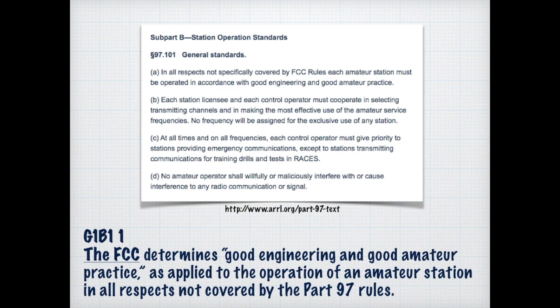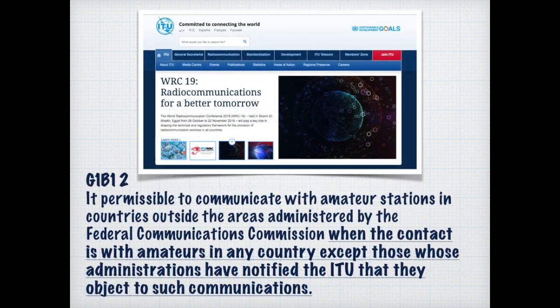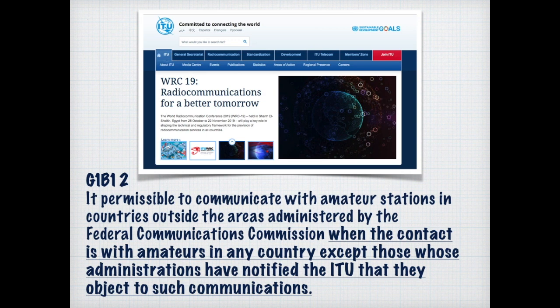Part 97 also determines what constitutes good engineering and good amateur practices and how those definitions are applied to amateur stations in respect to what is not covered by Part 97. We're also expected to obey the rules of the international community — we're allowed to talk to people in other countries except for those countries that have notified the ITU that they object to such communications. Interestingly, countries even like North Korea don't formally object, though of course people there can't get a radio.